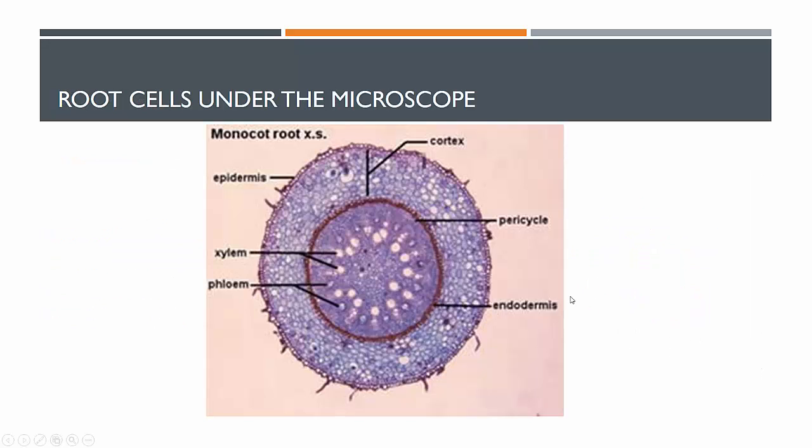This is a slightly blurry picture of a monocot root, a cross-section of it. You can see the black lines are all pointing - there's no arrows - they're all pointing to a particular feature. I want to show you how a biological diagram can be good of this particular cross-section, and how it can be bad.